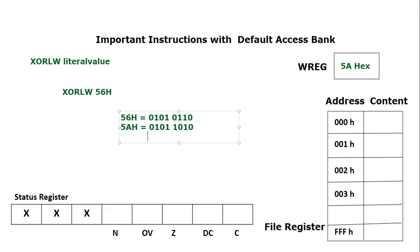So: 0 XOR 0 — same — result is 0; 1 XOR 1 — same — result is 0; 1 XOR 0 — different — result is 1; 0 XOR 1 — different — result is 1; 0 XOR 1 — different — result is 1; 1 XOR 0 — different — result is 1; 1 XOR 1 — same — result is 0; 0 XOR 0 — same — result is 0. This gives us the binary result 0000 1100.